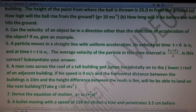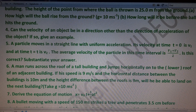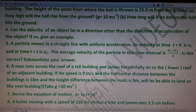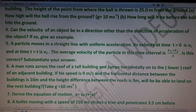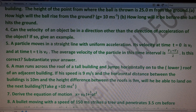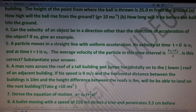Sixth question: a man runs across the roof of a tall building and jumps horizontally onto the roof of an adjacent building. His speed is 9 m/s, the horizontal distance between the buildings is 10 meters, and the height difference between the roofs is 9 meters. Will he be able to land on the next building?